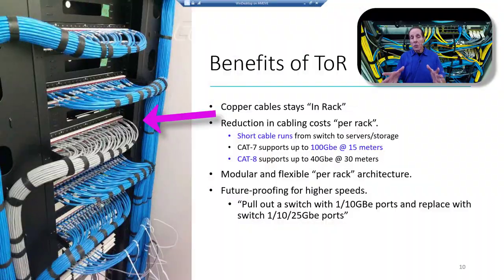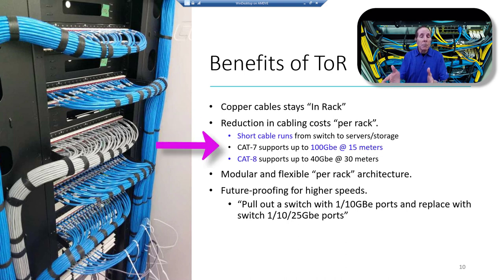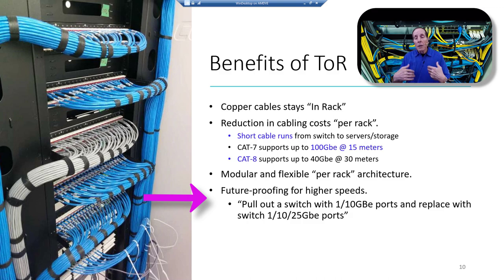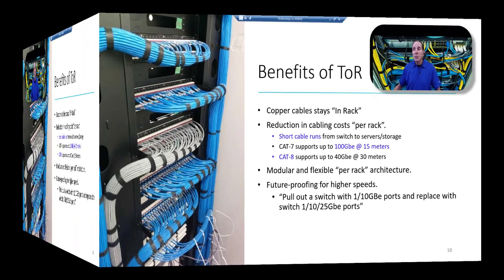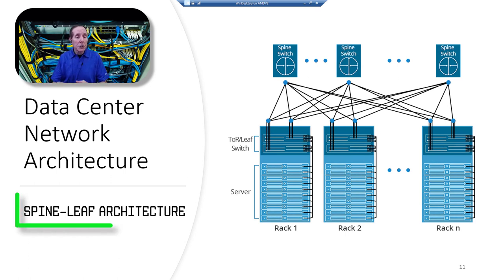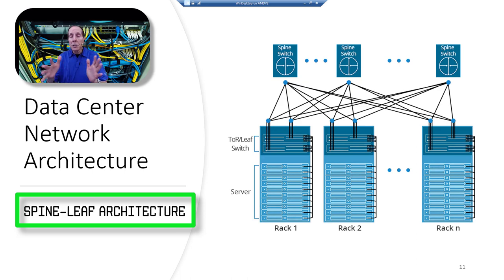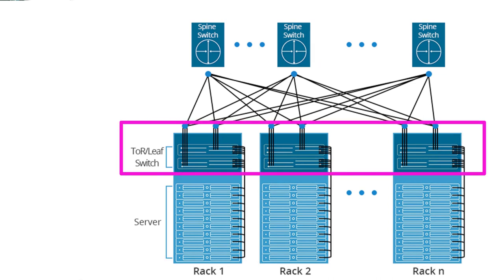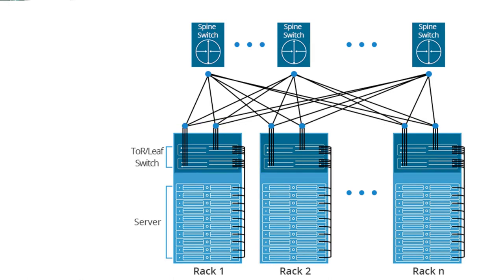The benefits of TOR: if you're using copper cabling, all the copper stays within the rack, reducing cable cost through shorter runs. CAT 7 and CAT 8 can be used because of shorter cable runs. It provides modular, flexible per-rack architecture and future-proofing for higher speeds — just pull out one switch and put in a better one. Because so many data centers base their network architecture on spine-leaf topology, literature and white papers often use the words TOR and leaf synonymously. Almost always in a spine-leaf architecture, the TOR switch is also called the leaf switch.